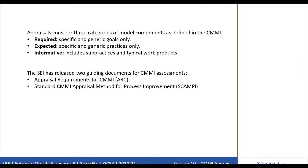SCAMPI A, B, and C represent the three appraisal classes. SCAMPI A is the method description document that defines rules for ensuring consistency of SCAMPI A appraisal ratings. For benchmarking against other organizations, appraisals must ensure consistent ratings — the achievement of a specific maturity level or satisfaction of a process area must mean the same thing for different appraised organizations. SCAMPI A is the officially recognized and most rigorous method by SEI, and it is the only method that can result in benchmark quality ratings.